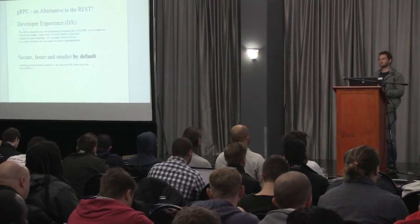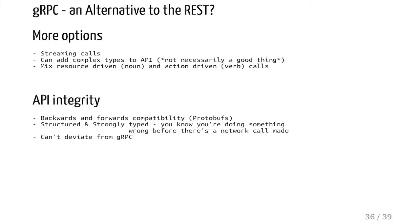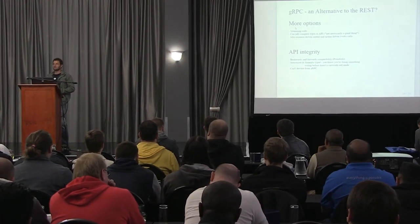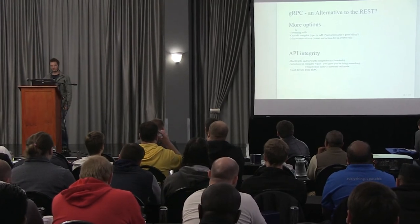With gRPC you get more options. You can add streaming to your API, you can add complex types — though that's not always necessarily a good thing, you don't want to confuse your clients. And you can mix your API — you don't have to be fixated on resources and CRUD operations. If you want to go beyond that and do some actions in your API, with gRPC it's easy. With protobufs, by adhering to a few simple rules, you have backwards and forwards compatibility of your messages. You can add messages later as your API is growing and it won't break any existing clients.